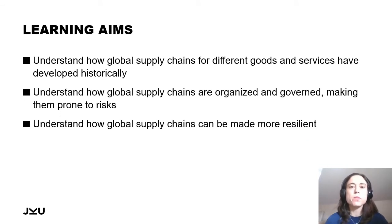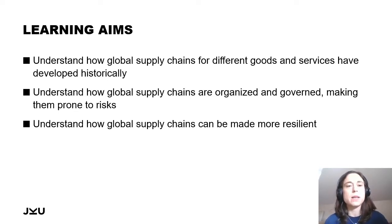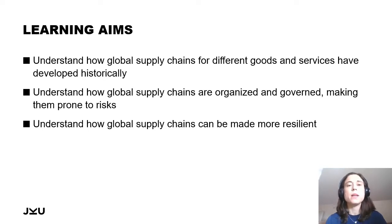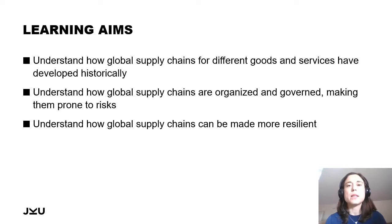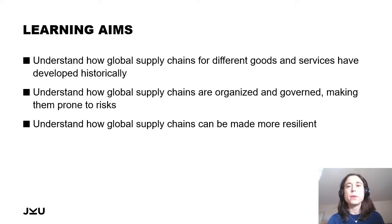There are three learning aims which also structure this short lecture. First, I want you to understand how global supply chains for different goods and services have developed historically, using two examples: the pharmaceutical supply chain as representative for knowledge-intensive goods, and the garment supply chain as representative for manufactured goods. Second, I want you to understand how global supply chains are organized and governed, and some of the complexities that make them prone to risks. Finally, I will introduce some ideas of how global supply chains can be made more resilient.